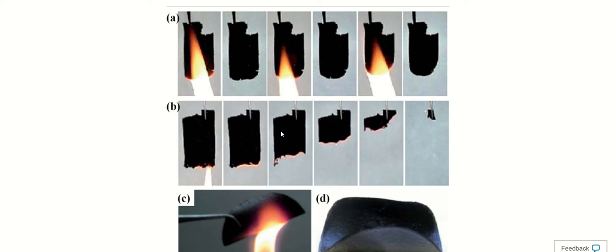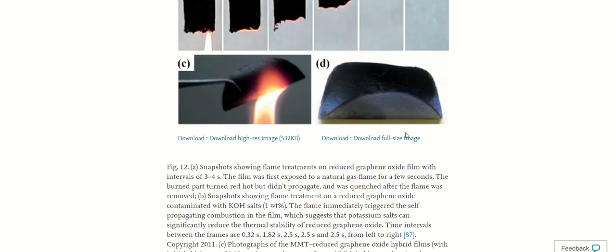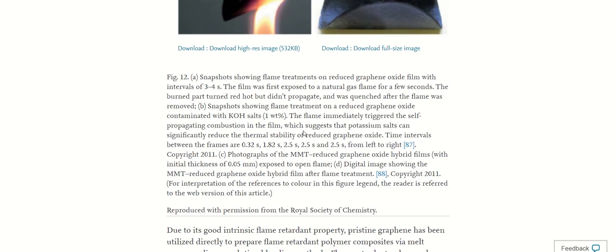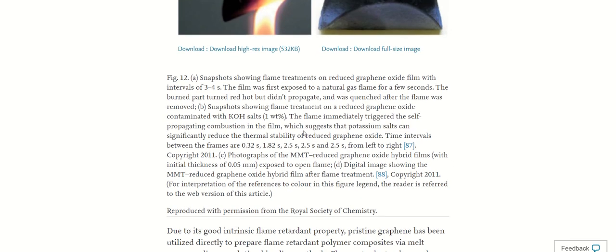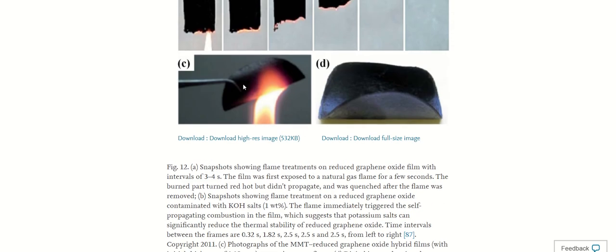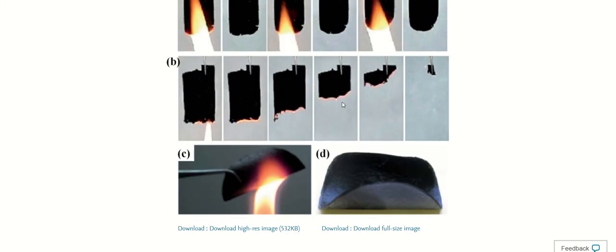Then they used an MMT reduced graphene oxide, and when they were trying to burn it, it was not burning. So I think the future is using graphene in various elements that are around us to create feasible fire retardants.